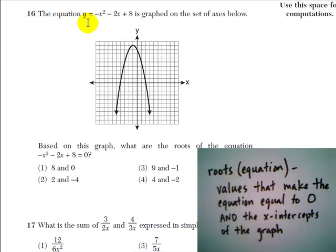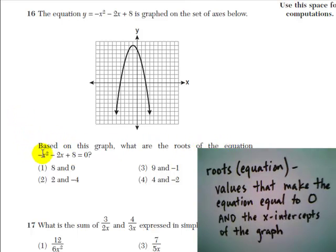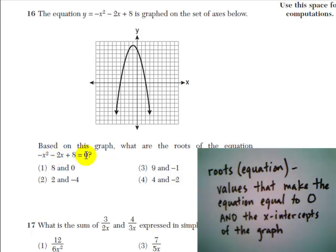Question 16 tells us the equation y equals negative x squared minus 2x plus 8 is graphed on the set of axes below. Based on this graph, what are the roots of the equation negative x squared minus 2x plus 8 equals 0?